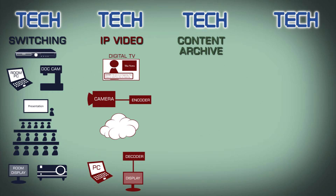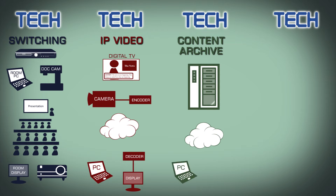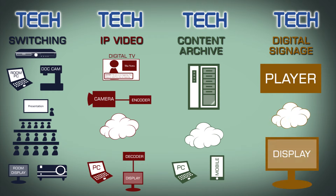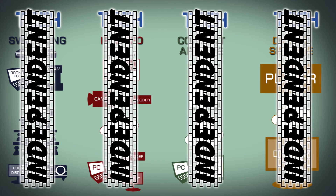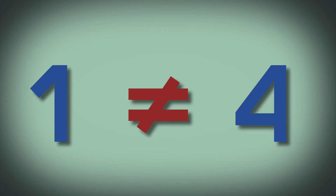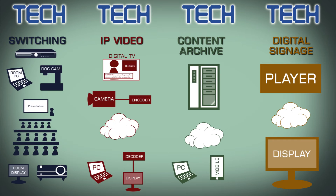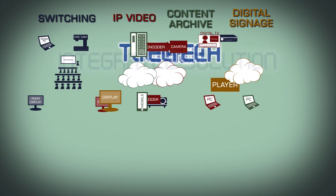Then you could store recorded content like training videos and marketing videos on a content server that users could access from their PCs and mobile devices. And finally, you could have a digital signage system that may or may not be able to play the videos in your video archive. This would give you all the features you want, but these systems are all working independently — none of them really work together. What you need is to integrate these systems into a single solution.